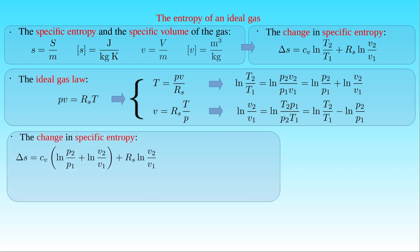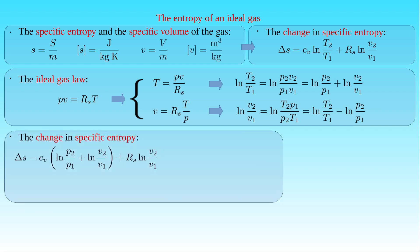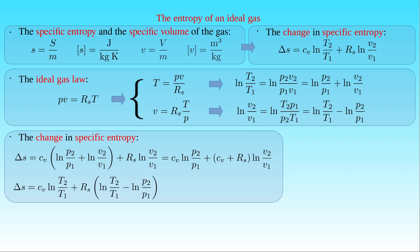Substituting the expression for the logarithm of the temperature ratio into the entropy equation, we can state that ΔS equals C_V times the logarithm of P2/P1, plus (C_V + R_S) times the logarithm of V2/V1. Similarly, substituting the expression for the logarithm of the specific volume ratio, ΔS equals (C_V + R_S) times the logarithm of T2/T1, minus R_S times the logarithm of P2/P1.